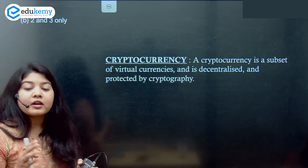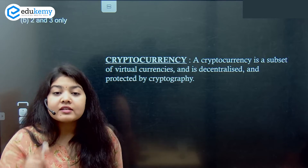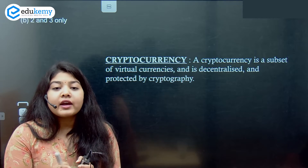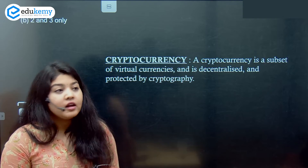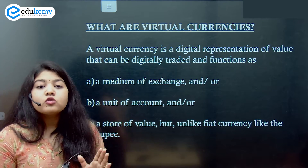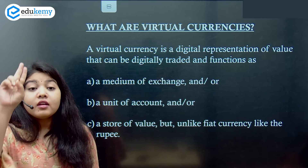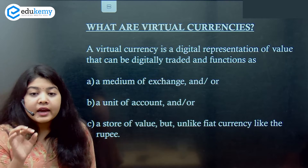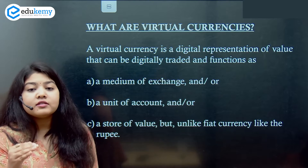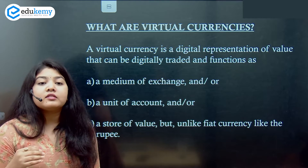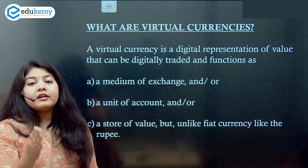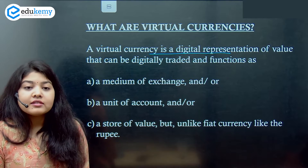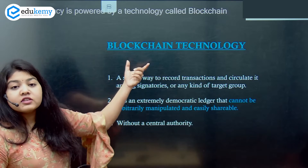Let me understand what cryptocurrency is. Cryptocurrency is a subset of virtual currencies. It is decentralized and protected by cryptography — using cryptic science to protect the transaction so no alteration can be done. Virtual currencies are a medium of exchange, have a unit of account, and store value, but this is not similar to fiat currency. For example, a coin has an intrinsic fiat value on it, whereas virtual currencies do not. The value of virtual currencies goes up and down depending on demand — it is directly linked to the market. Virtual currency is a digital representation of value that can be traded.